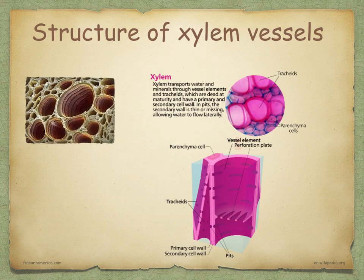Xylem vessels are like a long drain pipe — they are made of many hollow dead cells joined end to end. The end walls of the cells have disappeared, so a long open tube is formed. Xylem vessels run from the roots right up through the stem and branch out in every leaf. They contain no cytoplasm or nuclei. Their walls are made of cellulose and lignin. Lignin is very strong and helps to keep the plant upright. Wood is almost entirely composed of lignified xylem vessels.